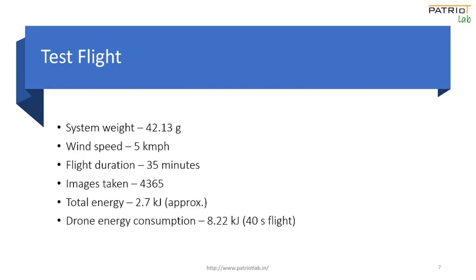Our first test flight was conducted on 20th February this year at our institute grounds. The wind speed was around 5 km/h and the whole setup weighed approximately 42 grams. The flight lasted 35 minutes, during which 4,365 images were captured at 2 images per second. Total energy expenditure was approximately 2.7 kilojoules — much lower than the energy consumption of a UAV for even one minute. The typical energy consumption of a UAV flying for one minute is around 10 kilojoules. These values are experimentally found and cited in our references.